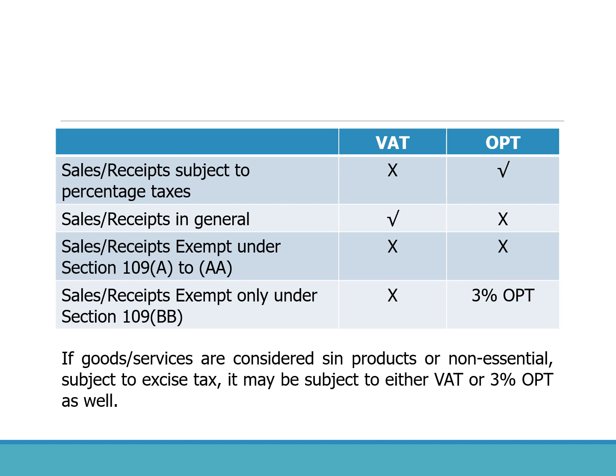This is generally the taxability applicable to transactions. Whenever there is a particular percentage tax already applicable on a transaction — for example, receipts of a common carrier subject to the 3% common carrier's tax — it is already considered exempt from VAT under Section 109E of the tax code. Those services already subjected to percentage taxes will no longer be subject to VAT.